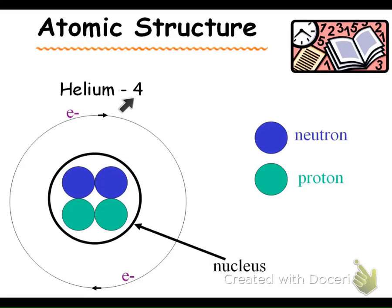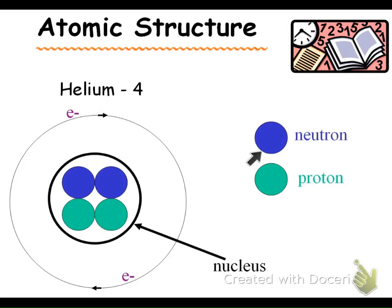That's depicted right there in helium-4. Anytime you see a number next to that name with that dash — helium-4 — that's telling you the mass number is 4. You always know that helium has two protons because the proton number equals the atomic number. Neutrons plus protons equals the mass number. We'll talk about when that mass number changes, what that is actually called. In this case our atom is neutral because our electrons equal our protons.